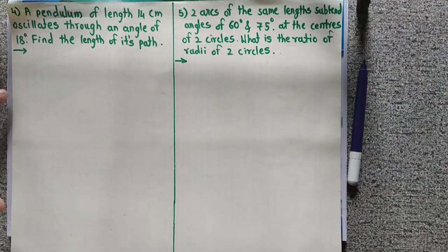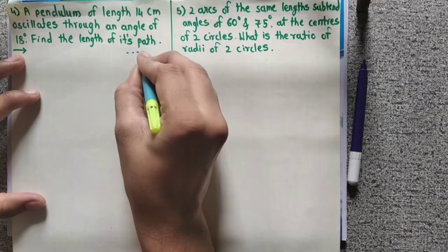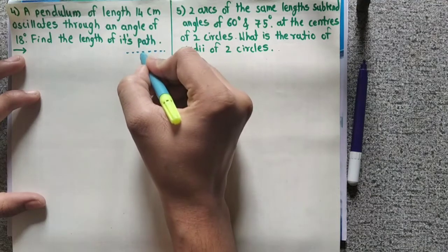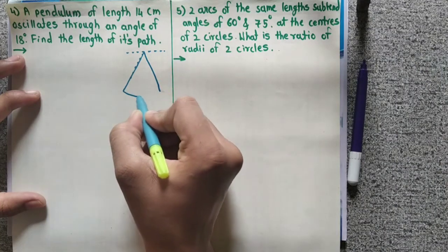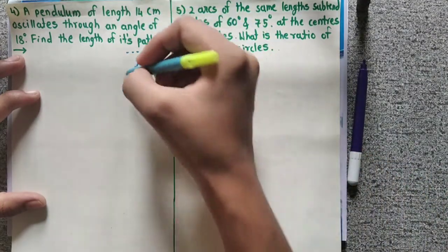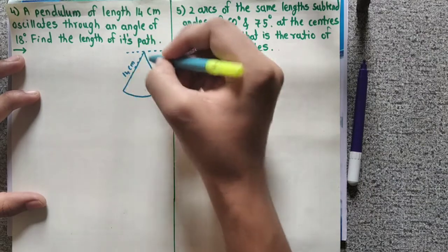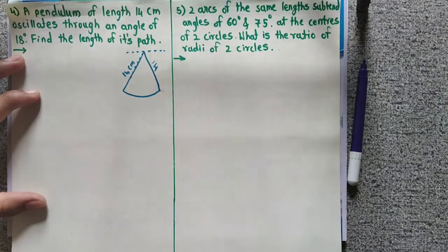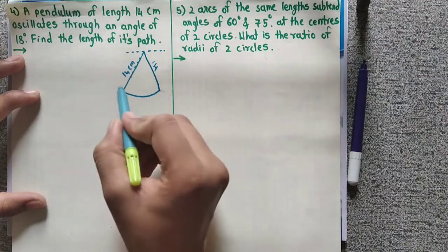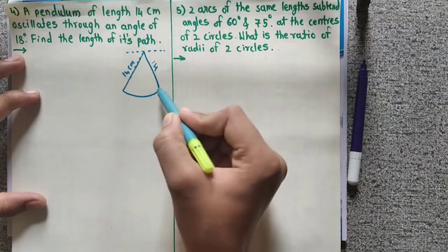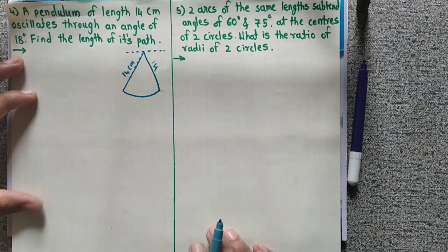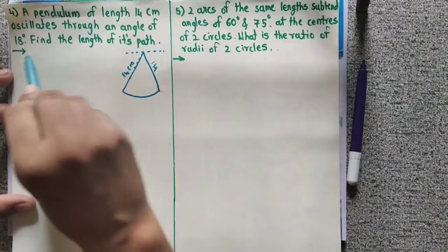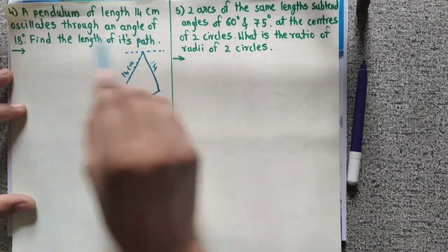Find the length of its path. The pendulum length is 14 cm. The length of its path is through an angle of 18 degrees.